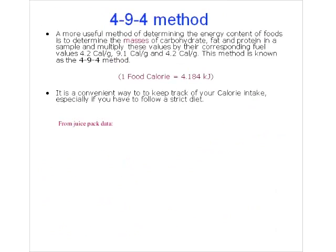On average, if we average all the different types of sugars and starches in your diet, the average energy per gram of carbohydrate is 4.2 kJ. The average energy from fat is 9.1 kJ per gram. So if you're eating fatty foods, you're getting twice the energy compared to carbohydrates like rice or pasta, because there's more energy in fat per gram.